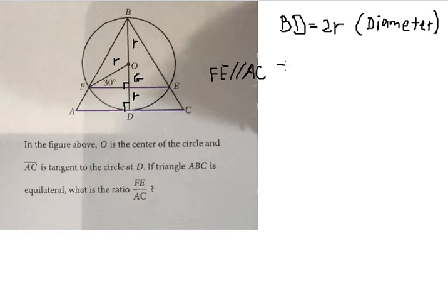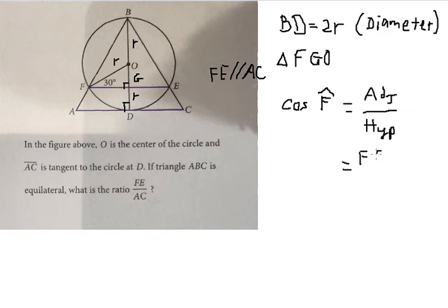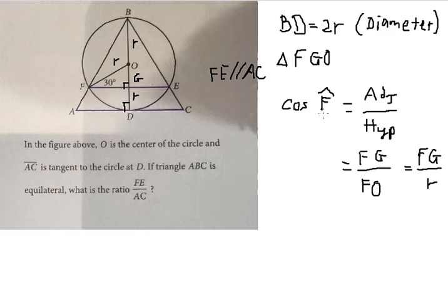Now we need to find FG in the triangle FGO. We have G equal to 90 degrees. We use the cosine of angle F: cosine equals adjacent divided by hypotenuse. So the adjacent side is FG and the hypotenuse is FO. We know that FO equals R, and the angle is 30 degrees.